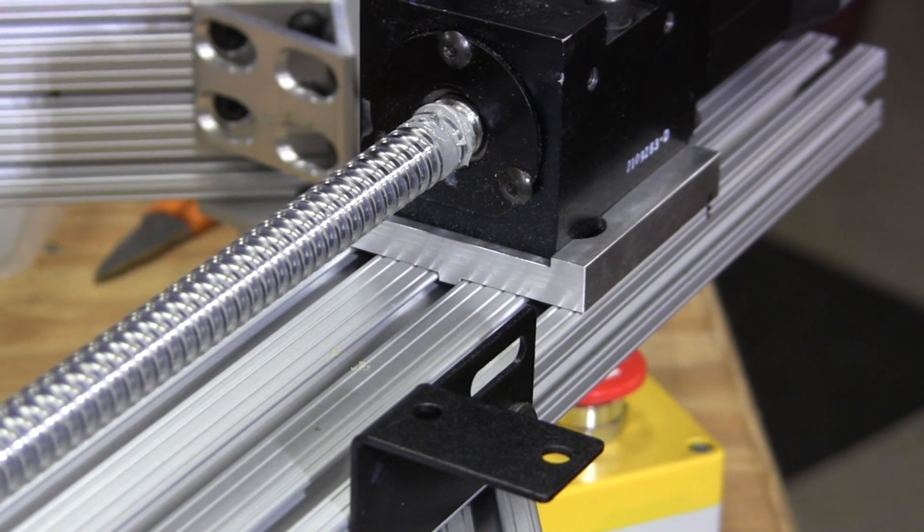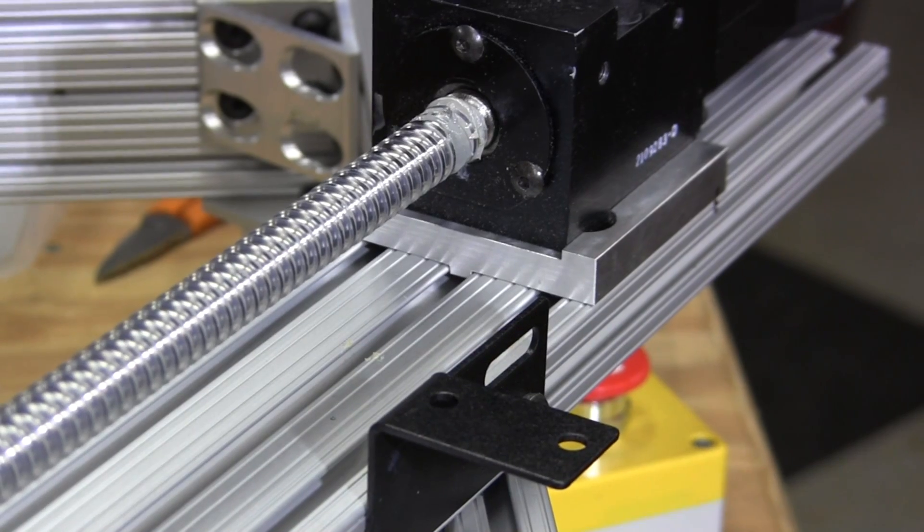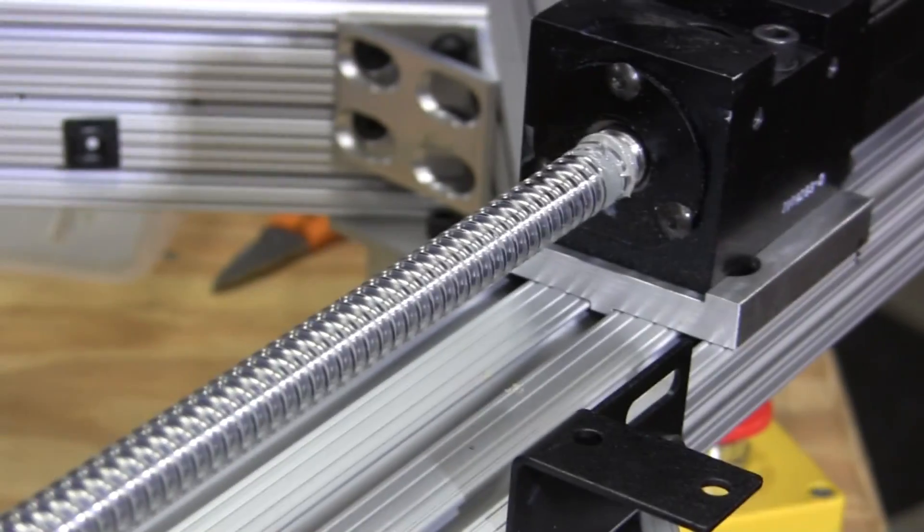There's a good close-up of that bracket. You can see how it has a center journal that fits inside the center T-slot right here.